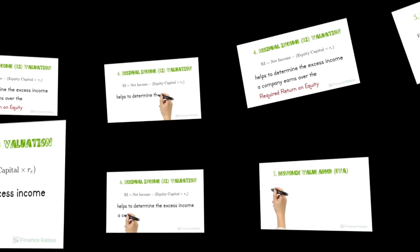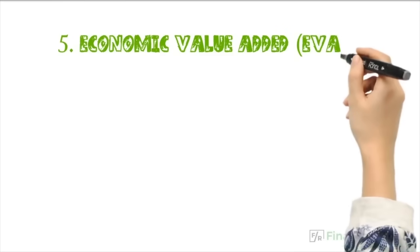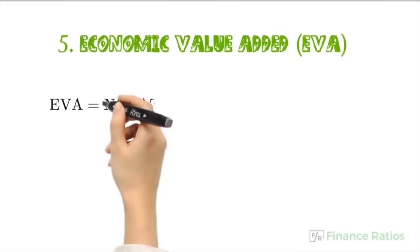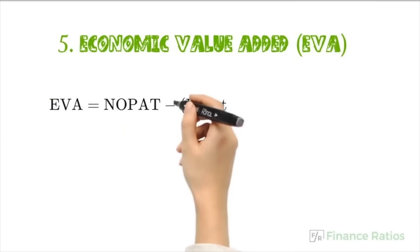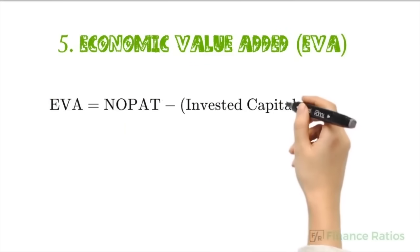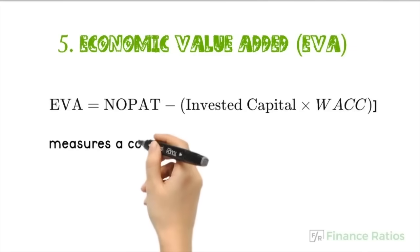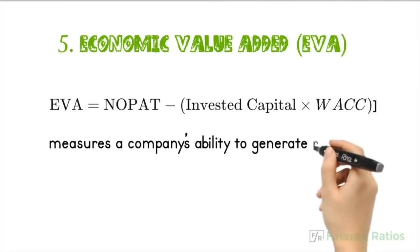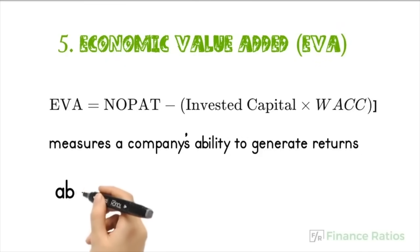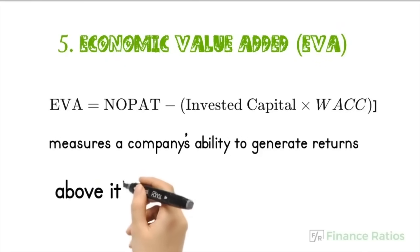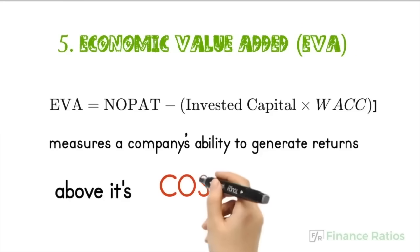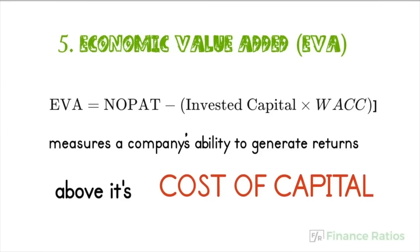And my personal favorite, number five: economic value added, also known as EVA. It is calculated by taking net operating profit after tax and subtracting invested capital multiplied by the weighted average cost of capital. It measures a company's ability to generate returns above its cost of capital.